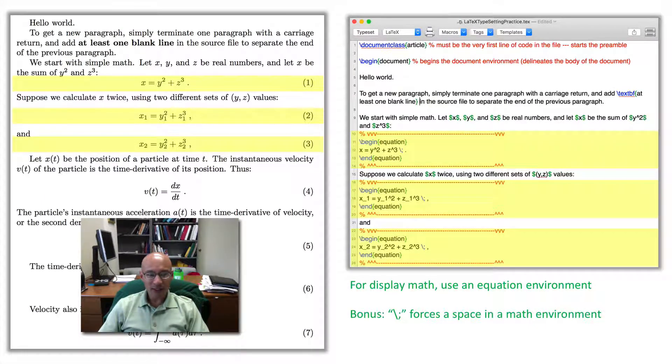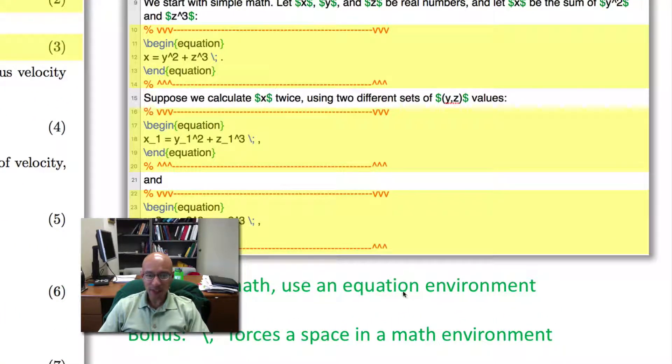Next we consider display math. So display math is different from inline math because it is set apart from the regular text. And to accomplish this, you can do a couple of things. The first, I'm not demonstrating here, but instead of single dollar signs to delimit the display text, you can use double dollar signs. But the preferred way is to use an equation environment. So here is the equation environment for equation number one. It's delineated by a begin equation and an end equation statement. And then the typesetting is just as before.